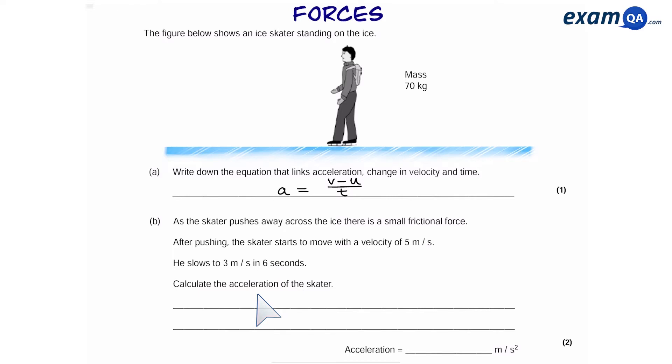So they've given us a lot of information. However, the main thing here is working out acceleration. And since we already have an equation above, we can use that to answer this part. So first of all, we're going to use the equation A equals V minus U over T.